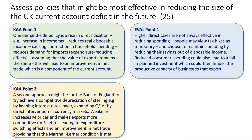My second point focuses on another approach: the monetary authorities could try to achieve a competitive depreciation of the exchange rate of sterling against the dollar and the euro. They might do that by keeping interest rates lower than they would otherwise be, by expanding QE and increasing liquidity in the banking system, which could lead to an outflow of money from the UK economy. In theory, they could also directly intervene in currency markets, selling pounds and buying dollars or euros. A weaker currency increases import prices and makes exports more price-competitive in dollars and euros, leading to expenditure-switching effects and an improvement in the net trade position, providing that the Marshall-Lerner condition is met.